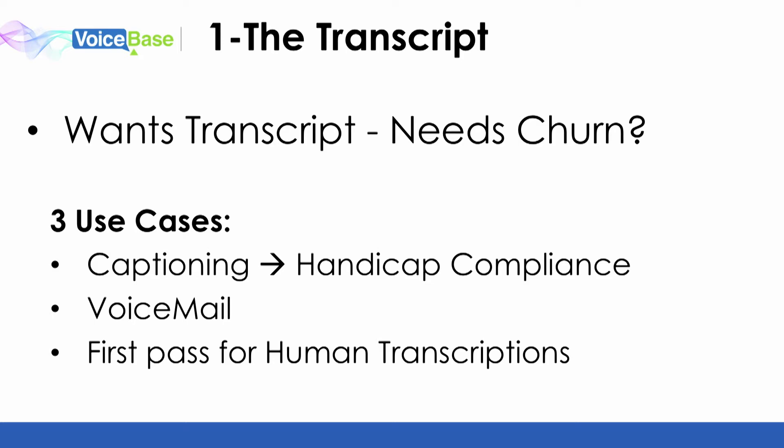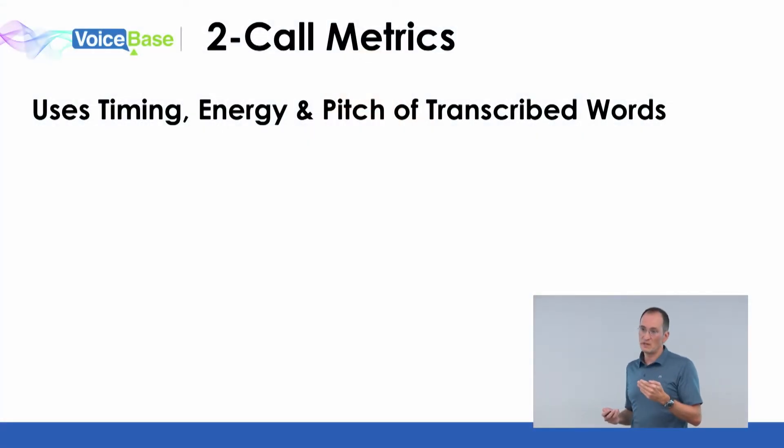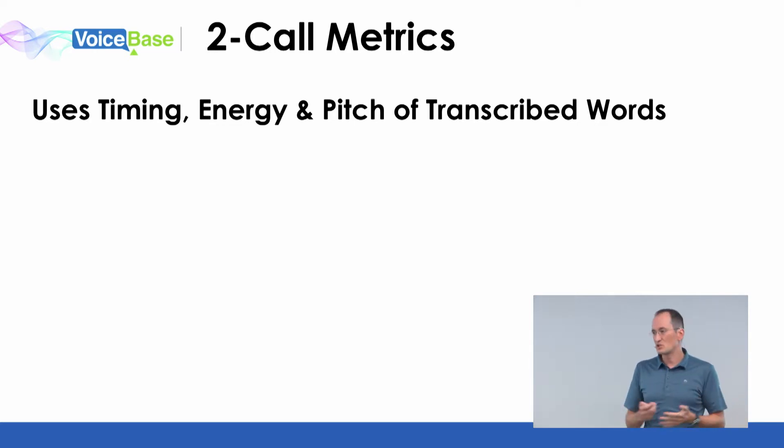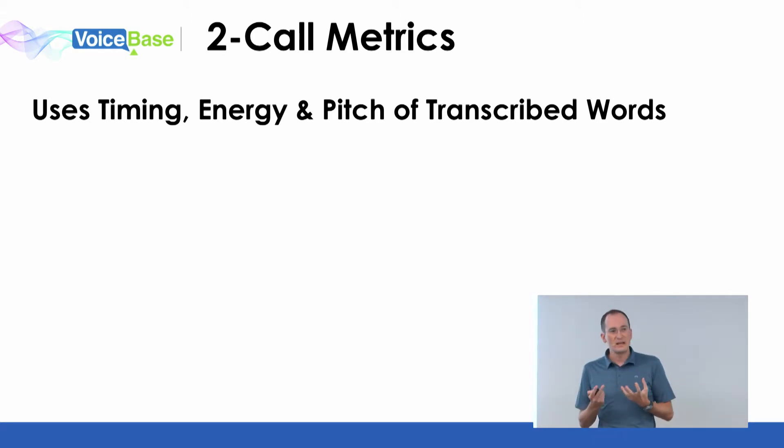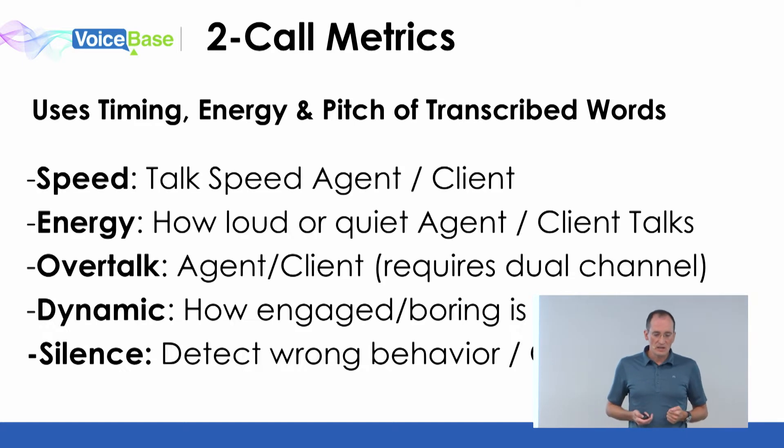So you need a churn detector, something else beyond the transcript. The first thing we do is what we call call metrics. When you create a machine transcription, you get different words the engine extracts, but also a lot of other information — start times, end times, voice energy, how loud you speak, how high you speak. There are a lot of additional metrics for each single word, and you can do math on them to create metrics.